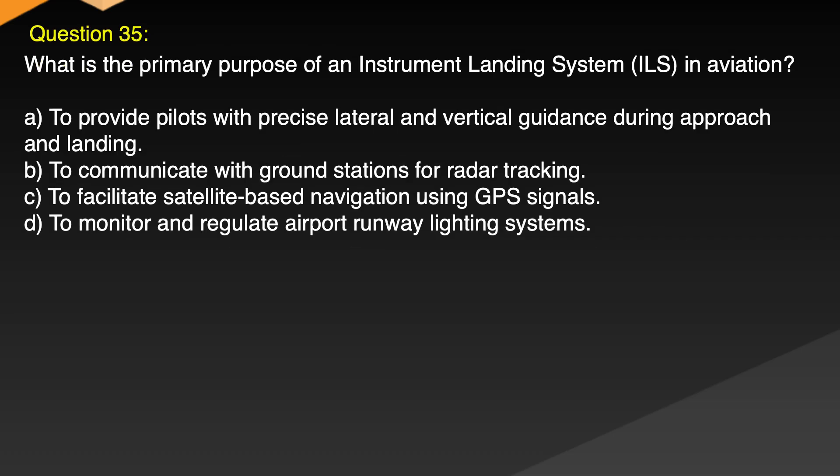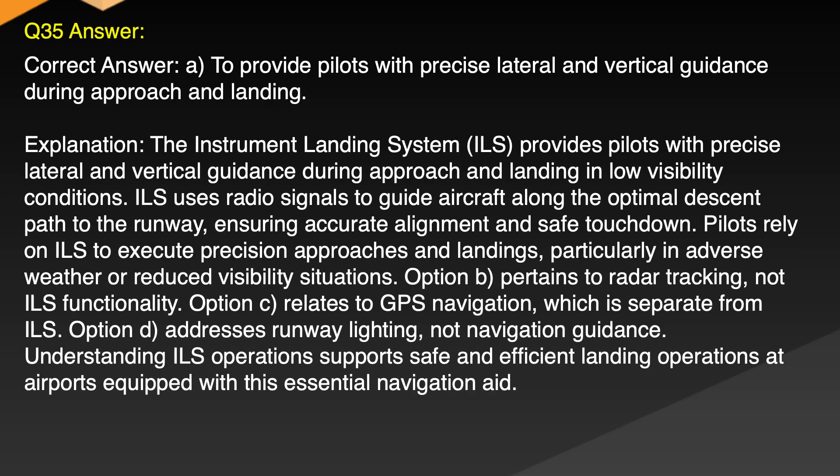Question 35. What is the primary purpose of an Instrument Landing System in aviation? A. To provide pilots with precise lateral and vertical guidance during approach and landing. B. To communicate with ground stations for radar tracking. C. To facilitate satellite-based navigation using GPS signals. D. To monitor and regulate airport runway lighting systems. Correct answer: A. To provide pilots with precise lateral and vertical guidance during approach and landing in low visibility conditions. ILS uses radio signals to guide aircraft along the optimal descent path to the runway, ensuring accurate alignment and safe touchdown. Pilots rely on ILS to execute precision approaches and landings, particularly in adverse weather or reduced visibility situations.